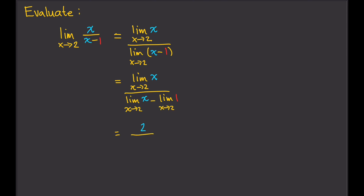The limit of x as x approaches 2 is 2, divided by the limit of x as x approaches 2 — again that's 2 — minus the limit of 1, and since 1 is a constant, that's just 1. So that gives us 2 divided by 2 minus 1, which is 1, so that gives us 2. Therefore, the limit of x over x minus 1 as x approaches 2 is 2. Again, as you may have observed, we can skip several steps and go directly by substituting.